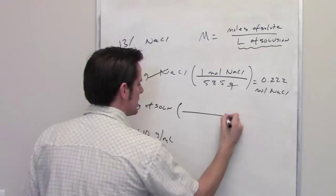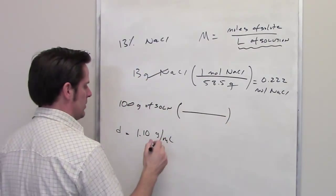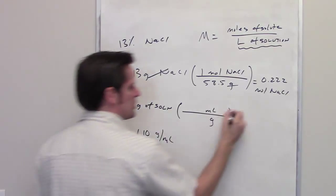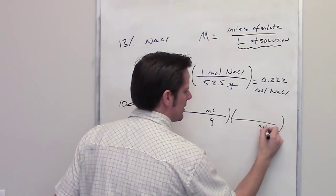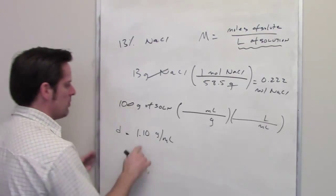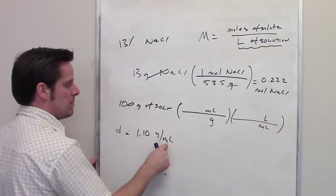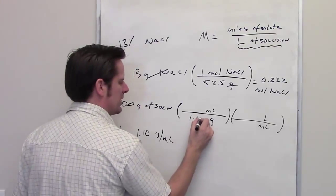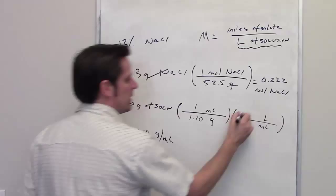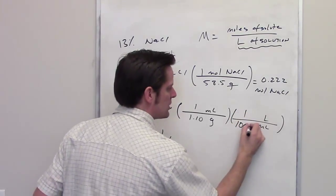Now I'm going to use the density to convert that into liters. I've got grams in the denominator, milliliters on top. I want liters, so I'm going to put milliliters in the denominator and liters on top. According to the problem, 1.1 grams per milliliter is the density. So I put 1.1 grams in the denominator, 1 milliliter in the numerator.